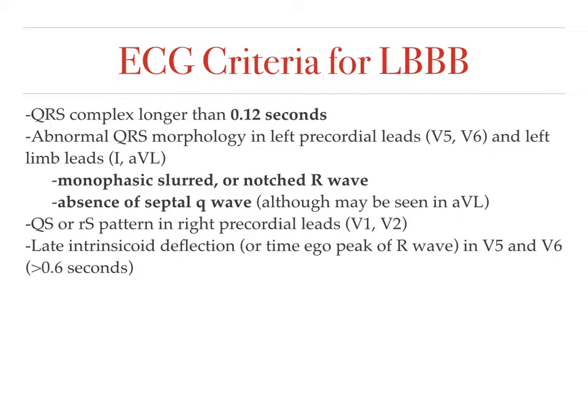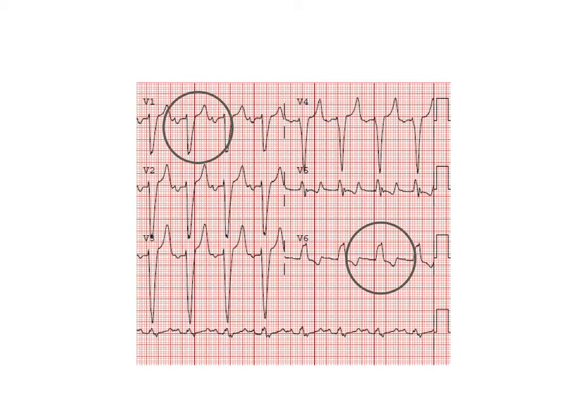Here are the criteria for left bundle branch block: you want a QRS complex longer than 0.12 seconds, a monophasic slurred or notched R wave in leads V5 and V6, and a large QS or RS pattern in V1 and V2.